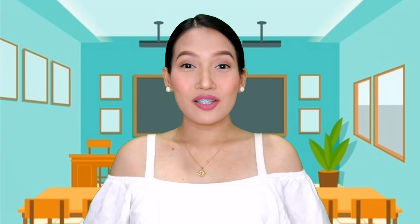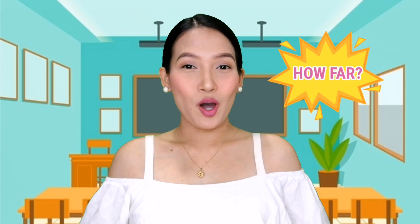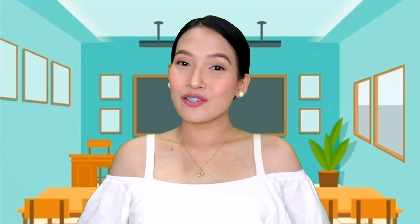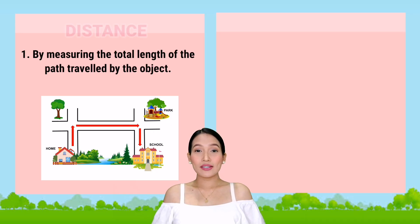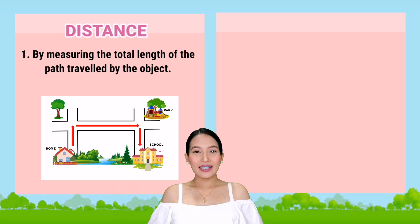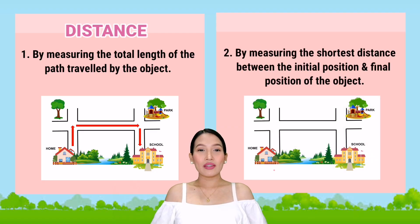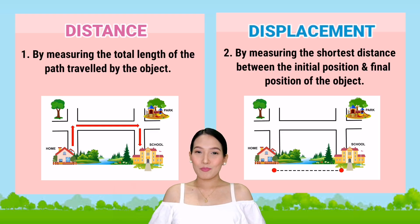We can then start describing motion with the question: how far did the object travel? There are actually two ways to answer this question. First is by measuring the total length of the path traveled by the object, which is called distance. And the second is by measuring the shortest distance between the initial position and final position of the object, which is called displacement.